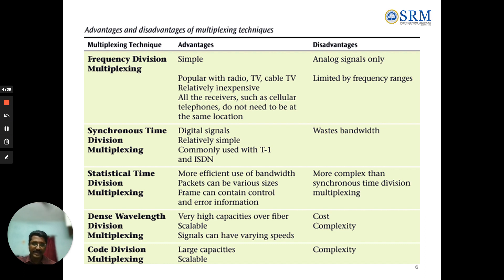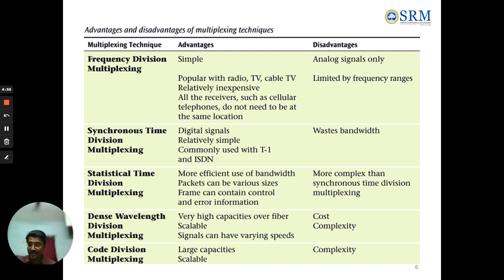Synchronous Time Division Multiplexing has the advantage of being a relatively simple digital signal, commonly used with T1 and ISDN. Its disadvantage is that bandwidth is wasted. Statistical Time Division Multiplexing offers more efficient use of bandwidth; packets can be of various sizes and frames can contain control and error information. Its disadvantage is that it is more complex than synchronous time division multiplexing.